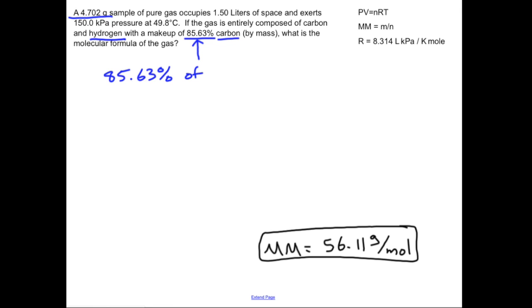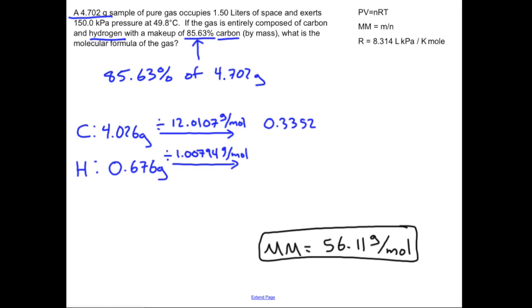So 85 and some change percent of this 4.702 gram number ends up being, for carbon, I have 4.026 grams of it. The balance, the remaining a little over 14% is all going to be hydrogen, or the remaining mass, which ends up being 0.676 grams of hydrogen. Now that we have those masses, we want to divide by their respective molar masses for each of those atoms, the atomic mass. So for carbon, that's going to be me dividing by 12.0107, that's grams per mole. And for hydrogen, we're dividing by 1.00794 grams per mole. That gets me a little over a third of a mole of carbon, and about that many moles of hydrogen.